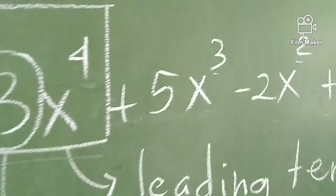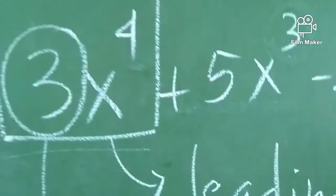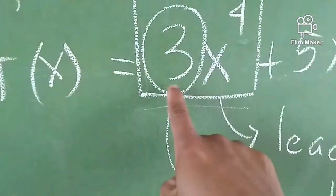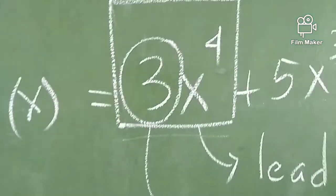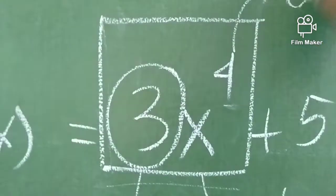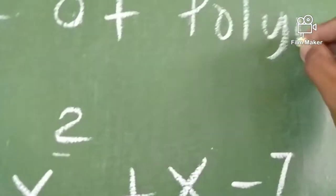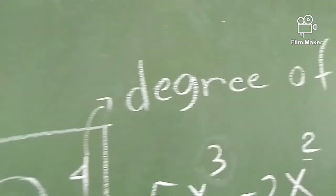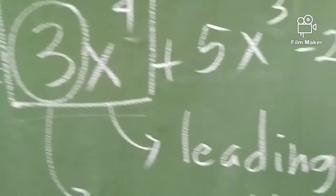Be careful not to confuse things — the 3 I'm referring to is not the exponent. That 4 is the exponent, not the leading coefficient. That is the exponent, and that is also what we call the degree of polynomial. So to repeat: the degree of polynomial is 4, 3 is the leading coefficient, and 3x to the fourth power is the leading term.